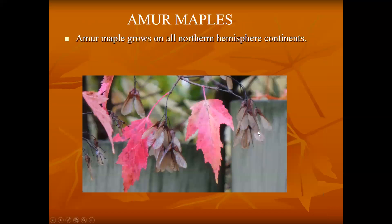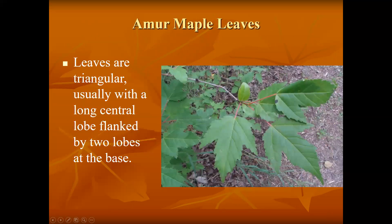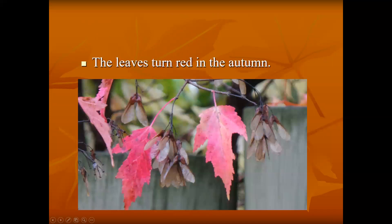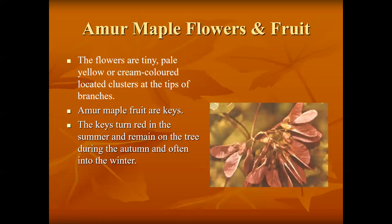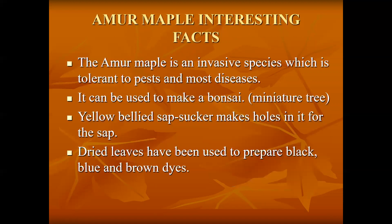Amber maple is very distinct in that it has one large section and then two small sections at the bottom. It turns red in the fall, and the maple keys are reddish in color. Amber maple is considered an invasive species which is tolerant to pests and most diseases.